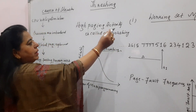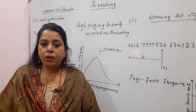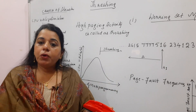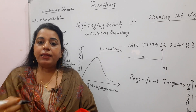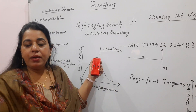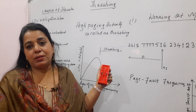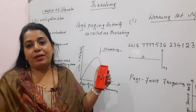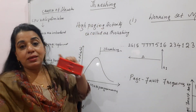A high paging activity — where paging activity means swap in and swap out — is what the system is spending all its time on. There is no useful work done, no execution. Rather than useful work, complete time is spent only in swapping pages in and out. This is called high paging activity, and the phenomenon is called thrashing.